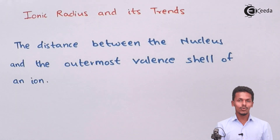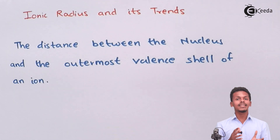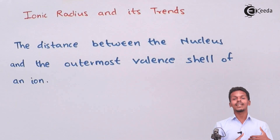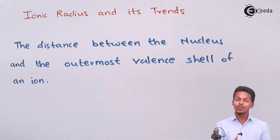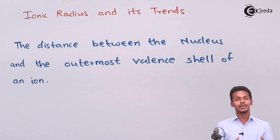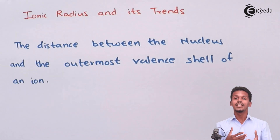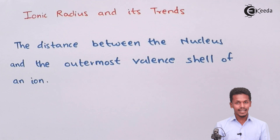What we have come to know is that the cation is smaller than its parent atom. When it comes to an anion, the anion has a larger size compared to that of its parent atom.